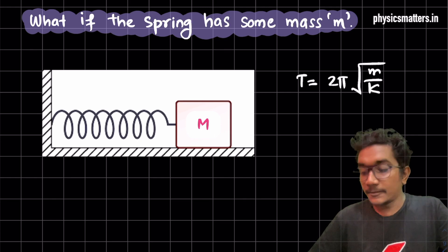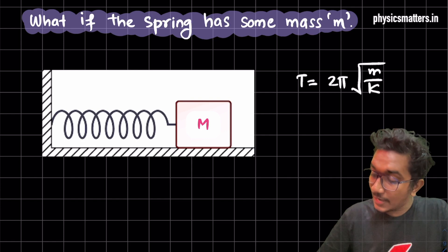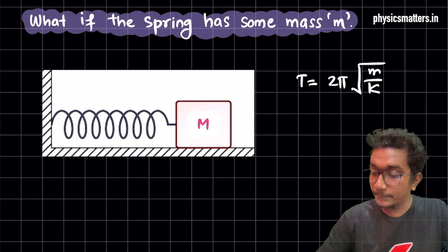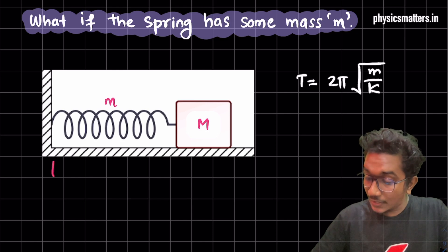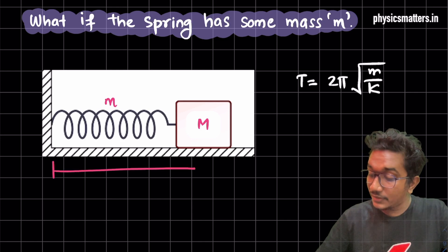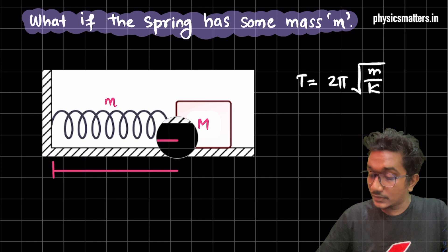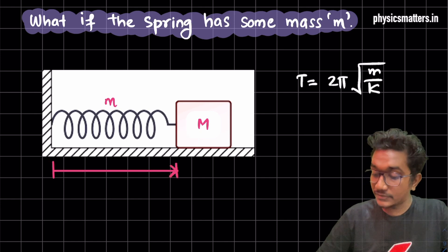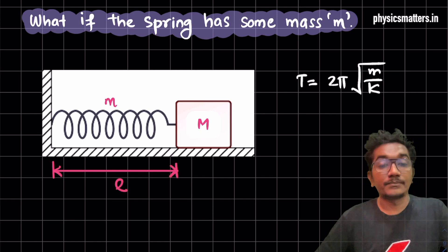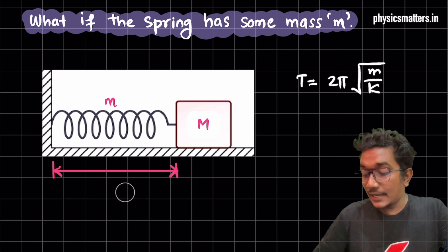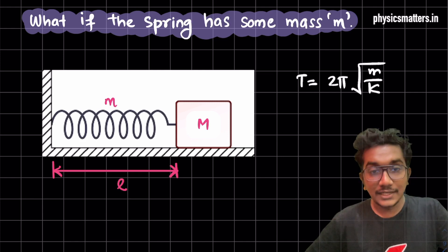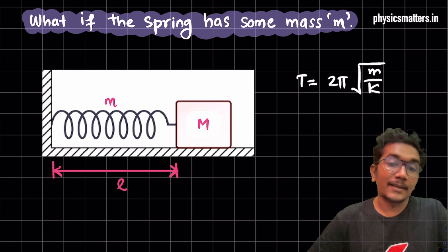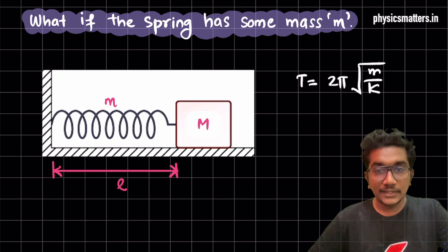But here, this particular spring itself has mass m and length l. So I will be representing all of them in the diagram. The question is: if this entire system is actually oscillating, then what is the time period? Let's derive that formula.